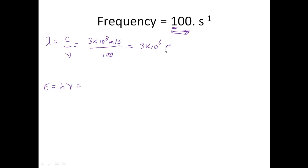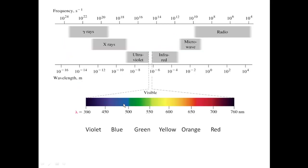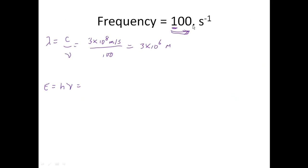That is a very, very, very long wave. 3 times 10 to the 6th meters — if we look at this, we go 3 times 10 to the 6th meters as a wavelength, and we go right off the chart. So we're into really, really long radio waves. Now, our frequency was 100, which is 1 times 10 to the 2nd — and 10 to the 2nd is also off the chart, so we're just checking to make sure that our numbers actually work.